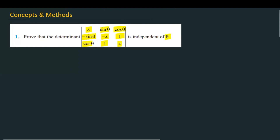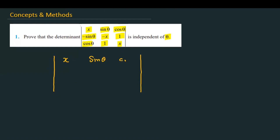Let's see how we are going to solve this problem. The determinant is given with the first row containing x, sin theta; the third row is cos theta, and the full matrix is: first row x, sin theta, cos theta; second row minus sin theta, minus x, 1; third row cos theta, 1, and x.